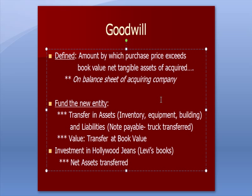We talked about in the prior video funding a new entity — we could transfer in assets. If we transfer them in, that's going to be at book value. We would have an account called Investment in Hollywood Genes, which is going to be on the books of the acquiring company, Levi's. Net assets transferred in is going to be the investment that appears on the balance sheet of the acquiring company, in this case Levi's.